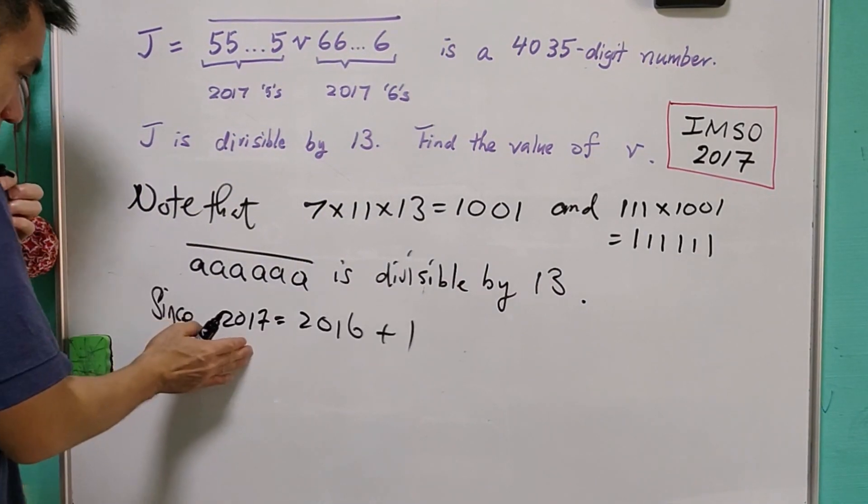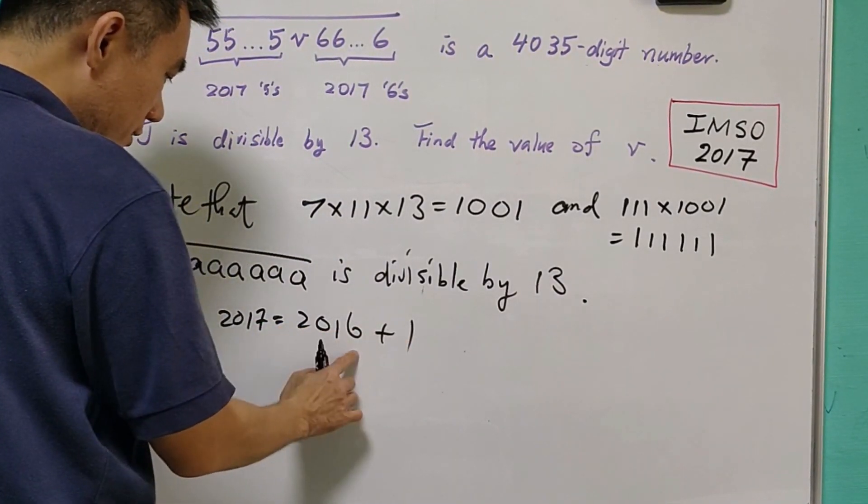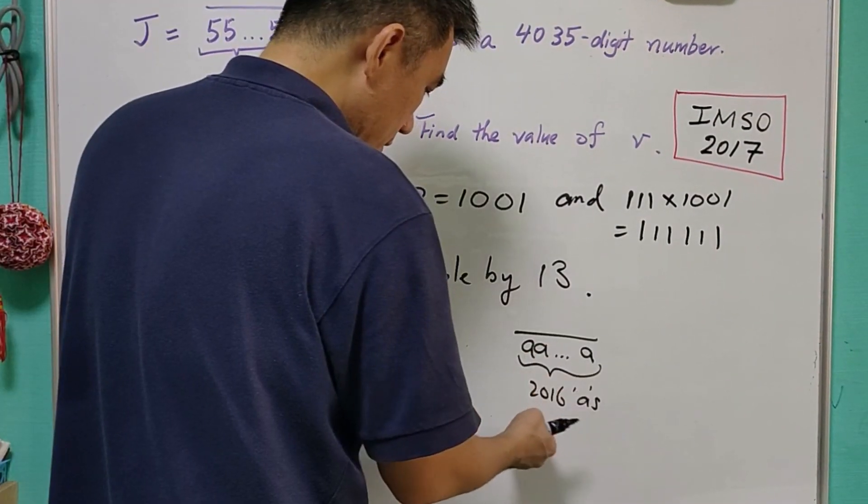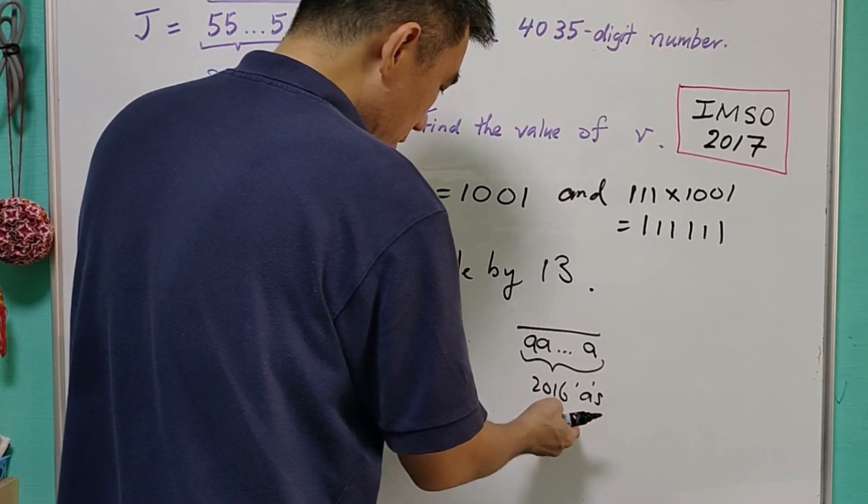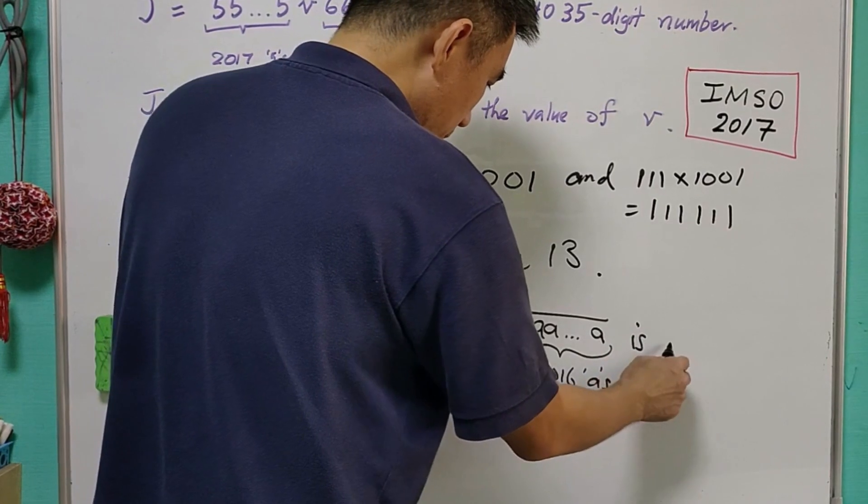Since 2017 equals 2018 minus 1, and 2016 is divisible by 6, we know that a 2016-digit number consisting of all A's is divisible by 13.